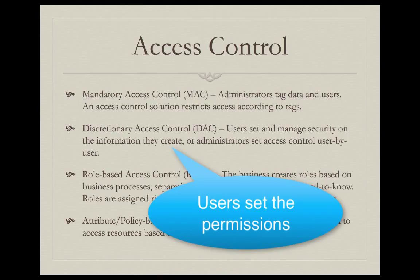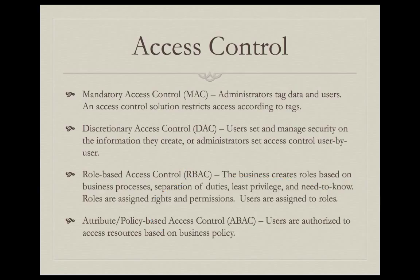Discretionary access control exists when the people who actually create the files and data are allowed themselves to set rights and permissions to those resources and data. Discretionary access control is sometimes morphed into RBAC by using groups, but even that is still discretionary access control even when a single administrator manages the access. This is what happens with Active Directory — out of the box, Active Directory is a discretionary access control solution.